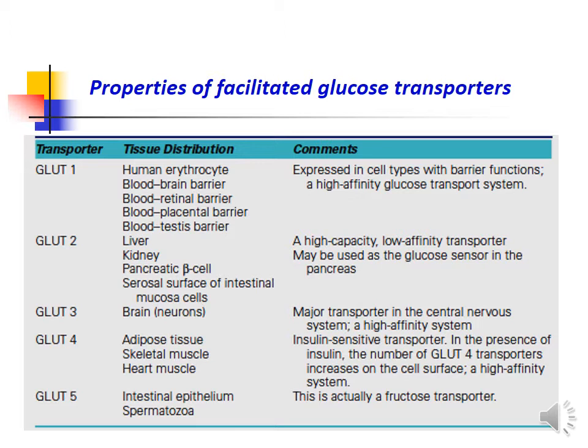Glucose transporter 4 is located in adipose tissue, skeletal muscle, and heart muscle. It is an insulin-sensitive transporter. In the presence of insulin, the number of glucose transporter 4 molecules increases on the cell surface, and it is a high-affinity system. Glucose transporter 5 is mainly present in intestinal epithelium and spermatozoa — it is actually a fructose transporter.